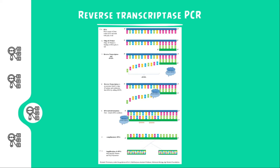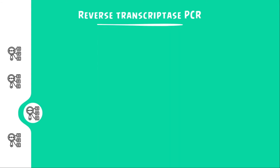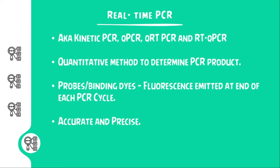The final type of PCR in this lecture is probably the most important one, employed in many fields of study — it's real-time PCR. This type of PCR is also known as kinetic PCR, qPCR, qRT-PCR, and RT-qPCR. The 'q' denotes that it can be quantitatively used for determining the PCR product. This quantitative property can be calculated using probes or binding dyes, wherein after each PCR cycle fluorescence is emitted, which can be recorded and graphed.